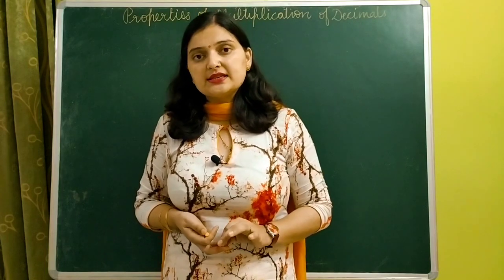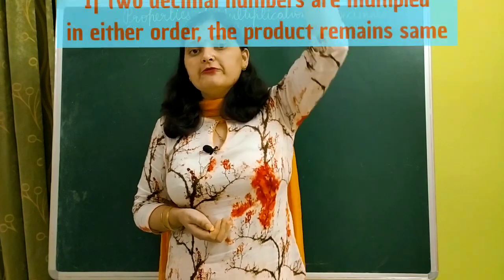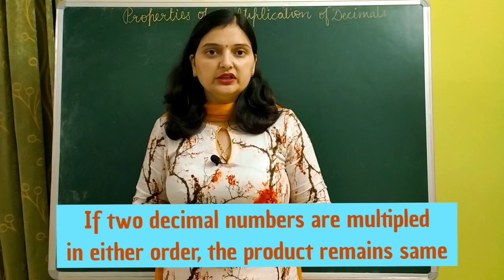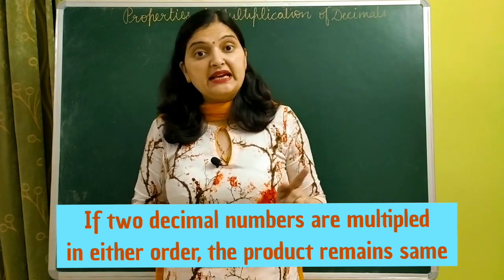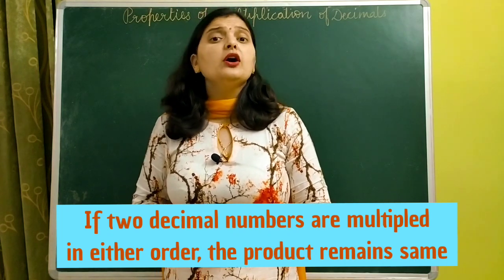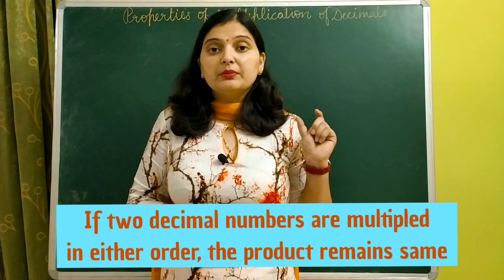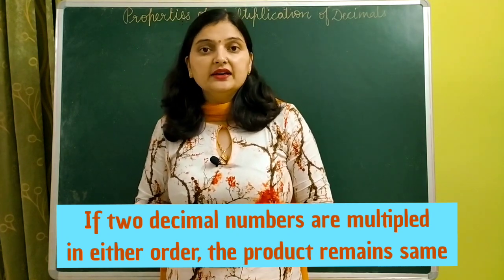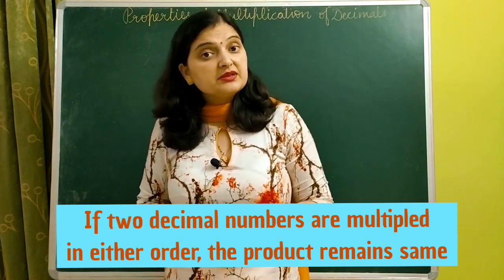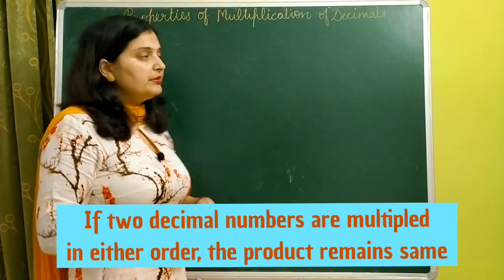Let's get started. The first property is: whenever we multiply two decimal numbers in either order, the product remains the same. If you take two decimal numbers and multiply them in any order, the result is always the same. This same property we have also done in fractions and in large numbers. Now let's check this property in decimal numbers.